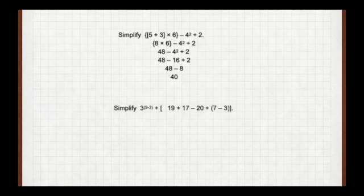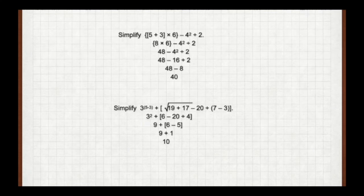Here's another practice problem. We have parentheses: 5 minus 3. We focus on that first — that's going to be used with 3 squared. We have brackets, so we do 7 minus 3, which is 4, first. Then we do the square root: under the square root we have 19 plus 17, which is 36. The square root of 36 is 6. We do 3 squared, which is 9. Then 20 divided by 4, which is 5.